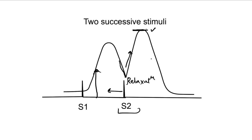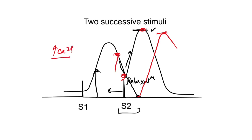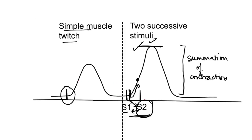The earlier the second stimulus is given, the greater the increase in height of contraction. This is because more calcium remains in the cytoplasm — less calcium has returned to the sarcoplasmic reticulum. In the case where the second stimulus is given during the contraction period, the muscle has not started relaxing at all, so all the calcium is still in the cytoplasm. With the second stimulus adding more calcium, we get a significantly increased height of contraction.